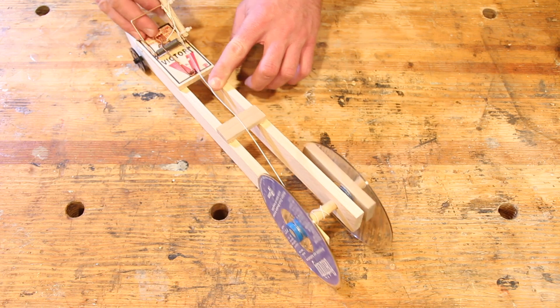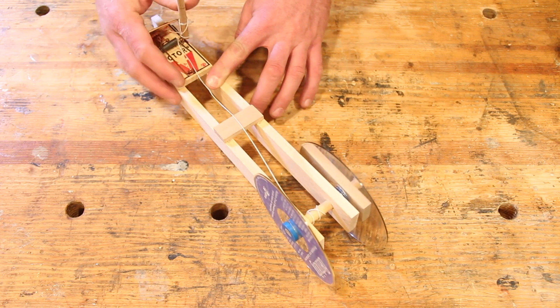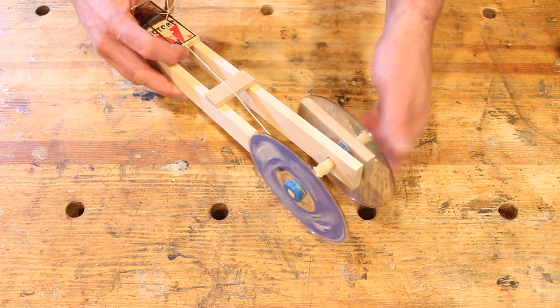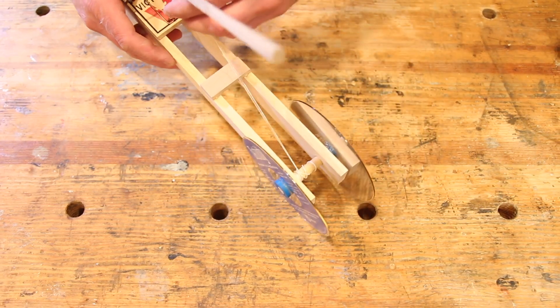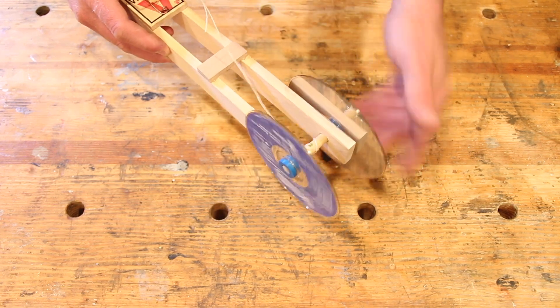Now you'll pick this arm up and continue to wrap your wheels, wrap the string around your back axle, and you are ready to test your car.